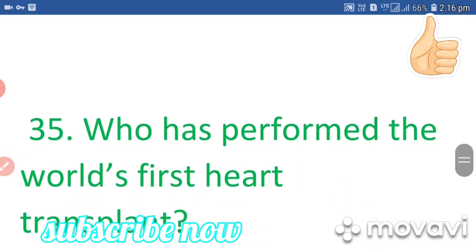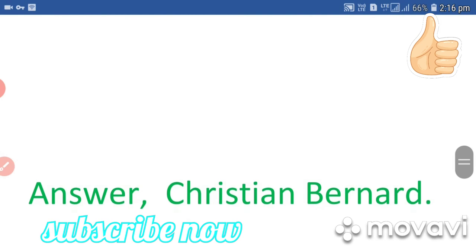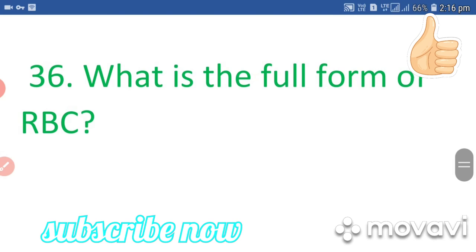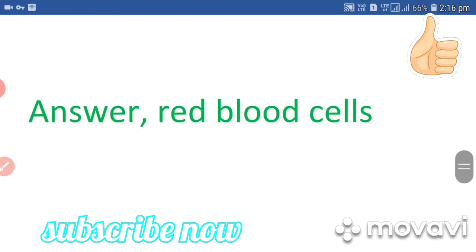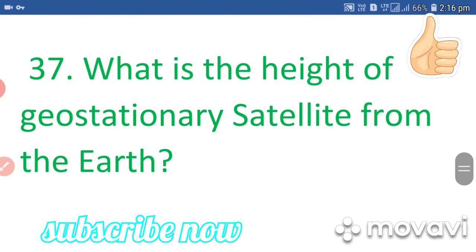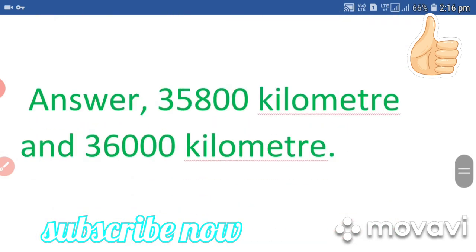Question 35: Who performed the world's first heart transplant? Answer: Christiaan Barnard. Question 36: What is the full form of RBC? Answer: Red blood cells. Question 37: What is the height of a geostationary satellite from the Earth? Answer: 35,800 km to 36,000 km.